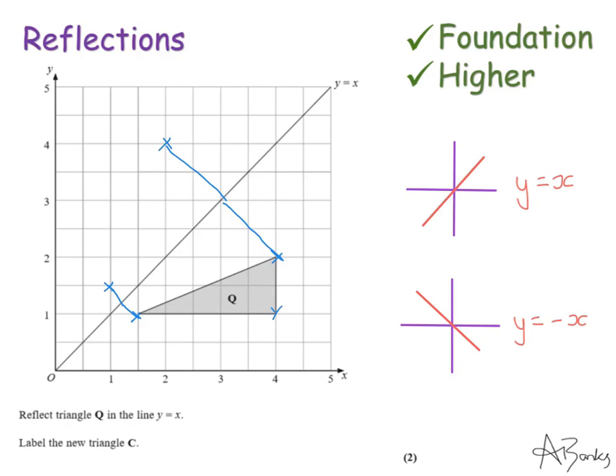And this one here is diagonally across three squares. So I'm going to go across another three and that's where the shape will end up. Now I've done every vertex, I just need to join these together so my shape will look like this.